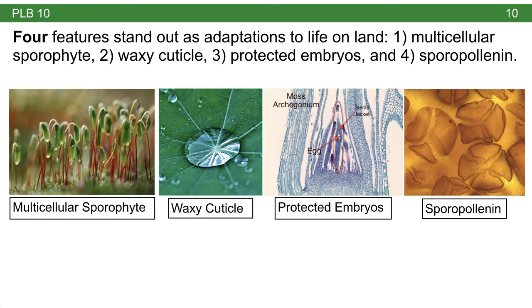Something we haven't talked about yet is the fact that all land plants have protected embryos. Recall that I called land plants embryophytes — 'phyte' means plant, so these are plants that protect their embryos. What that means is that gametes like the egg are protected in a special jacket of sterile cells. Once fertilized, a unicellular diploid zygote undergoes mitosis into a multicellular diploid sporophyte. Because the plant holds onto the zygote and allows it to develop in place into an embryo, it's called an embryophyte — it protects its embryos.